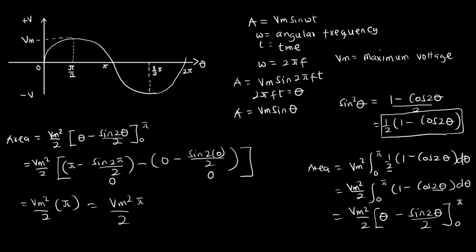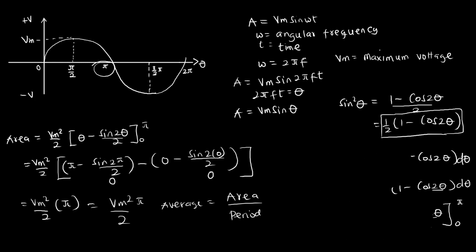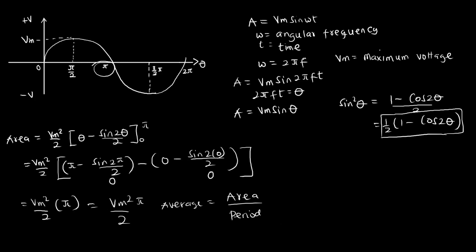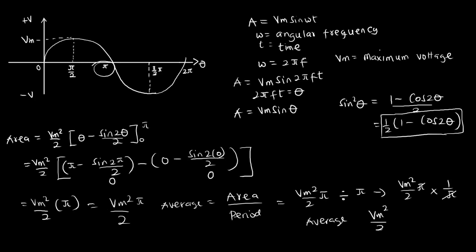After getting the area, I'm going to find the average, which is the area divided by the period. The period in this case is π. So the average equals Vm²π/2 divided by π, which I can write as (Vm²/2π) · (1/π) — the π cancels — giving average = Vm²/2. This is also called the mean.